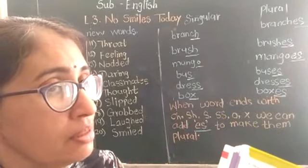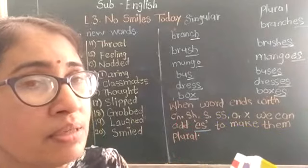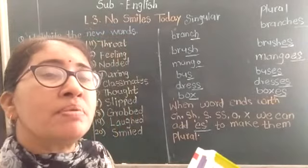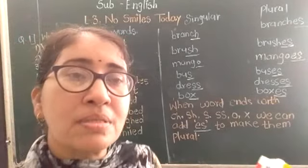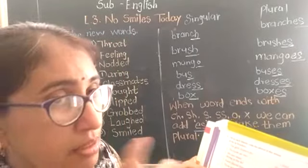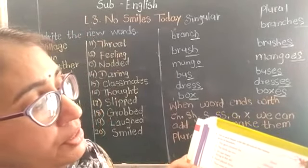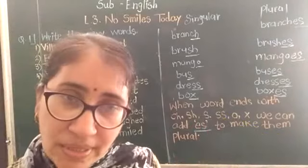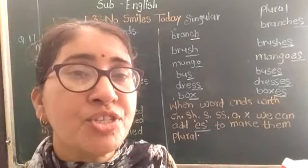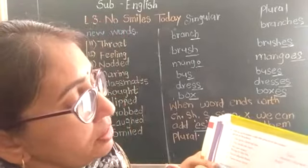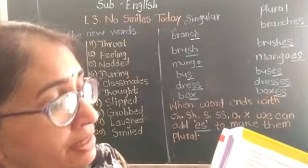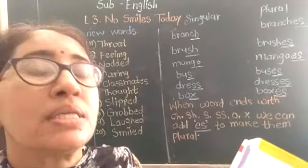We saw many birds — bird ends with D, so simply add S: birds — B-I-R-D-S. Three dishes on the table — dish ends with SH, so add ES: dishes. There were three buffaloes — buffalo ends with O, so add ES: buffaloes — B-U-F-F-A-L-O-E-S. Buffaloes walking down the road.